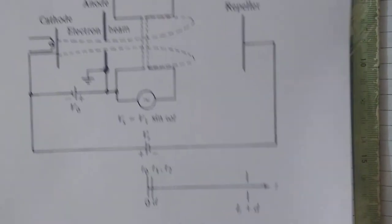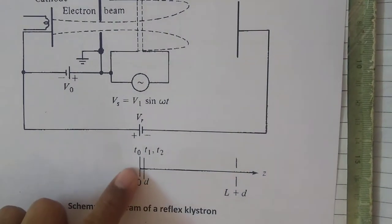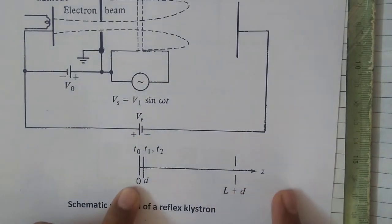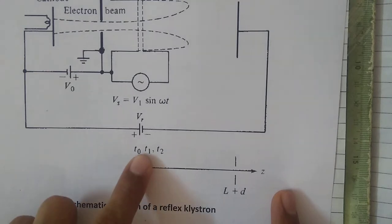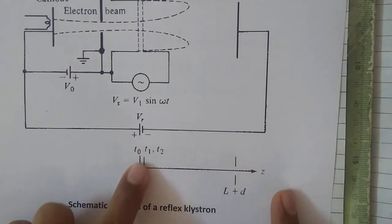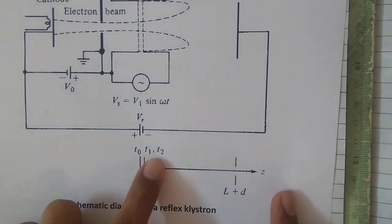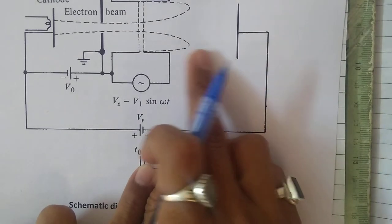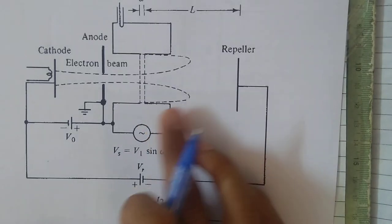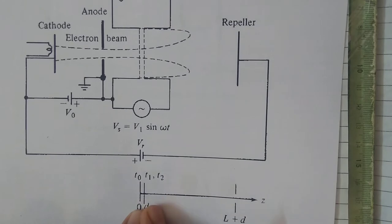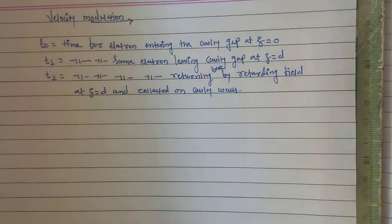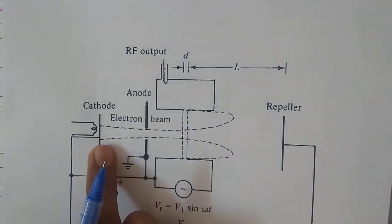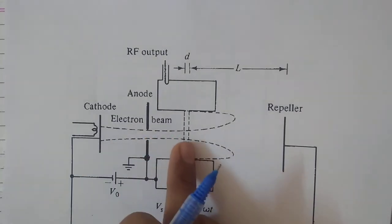With reference to this diagram, let us understand this. At time t0 electrons are entering the cavity gap and the distance traveled is z equal to zero, because electrons are traveling in the positive z direction. At time t1 electrons are leaving the cavity gap, having traveled distance d. At time t2, electrons are again returning back to the cavity because of the retarding field present in the space between the cavity and the repeller, arriving back at z equal to d.